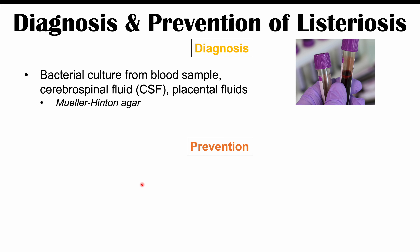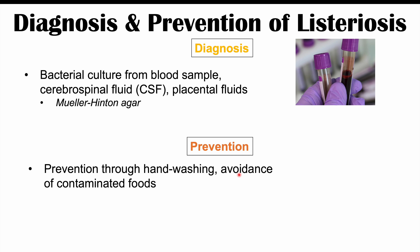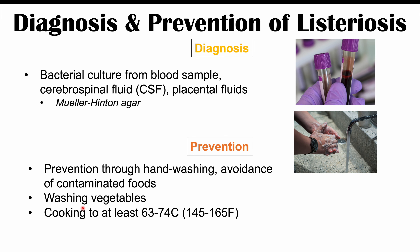For prevention, handwashing is important given the fecal-oral transmission route, as is avoiding contaminated foods. Listeria can even survive acidic environments like salad dressings due to its acid tolerance response, and survives refrigeration. Washing vegetables and properly cooking food is essential — while reproduction slows above 45-50°C, eliminating Listeria requires cooking to at least 63-74°C (145-165°F), with higher temperatures needed for processed or poultry meats.